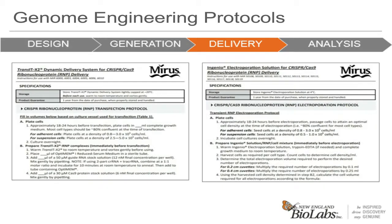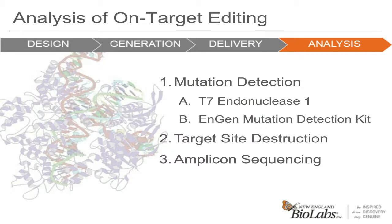So you have made the sgRNA, complexed your RNPs, and delivered them to cells. Now we are going to move on to determining how your experiment actually worked, or how to measure editing efficiency. We will start with the most widely used mismatch detection-based assays, including the T7 endonuclease 1 in our mutation detection kit.